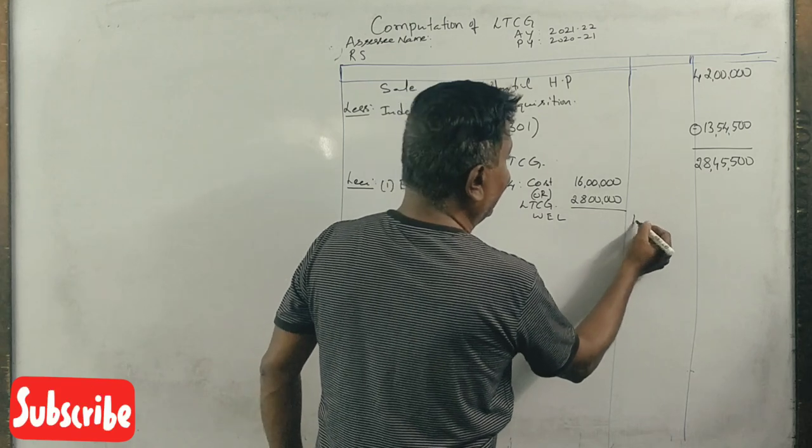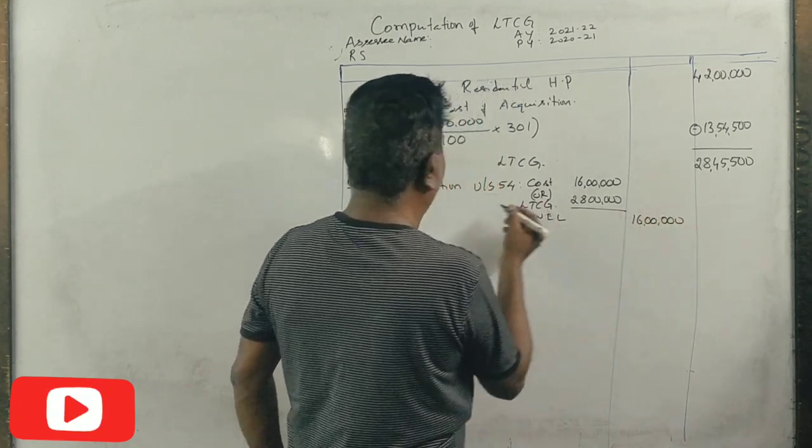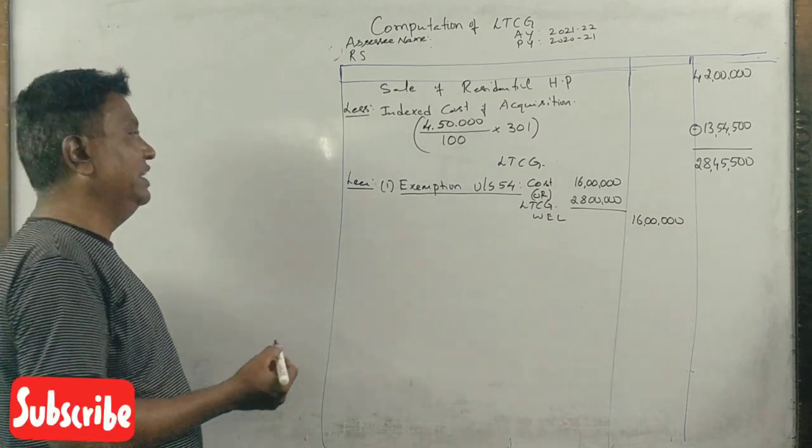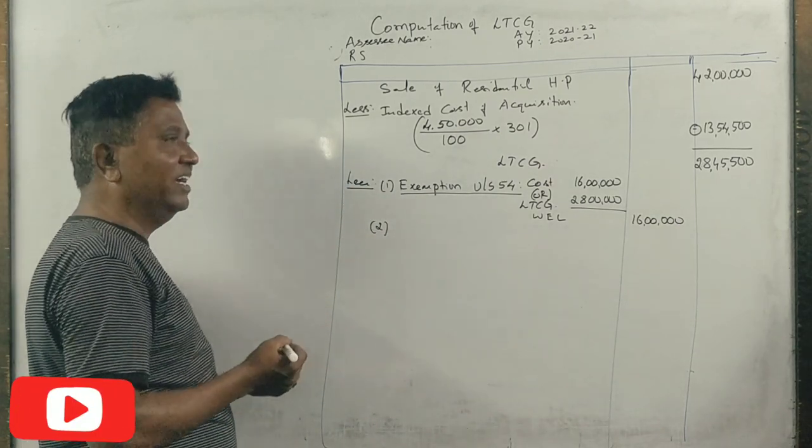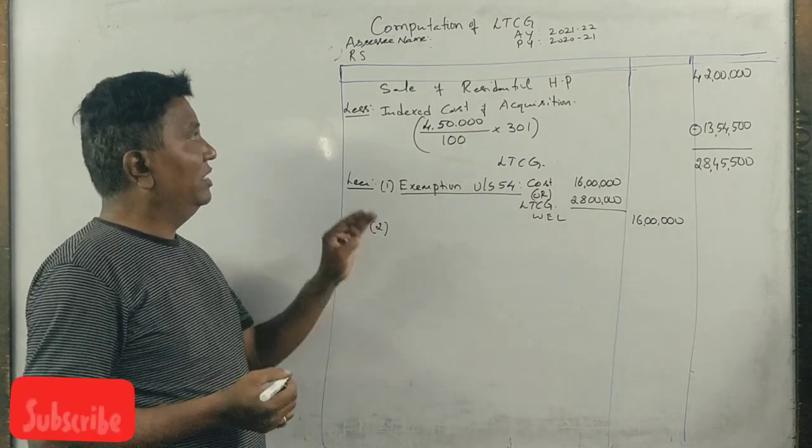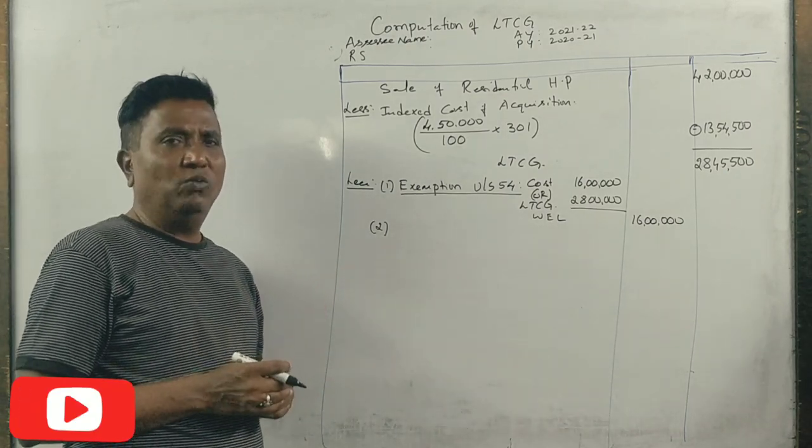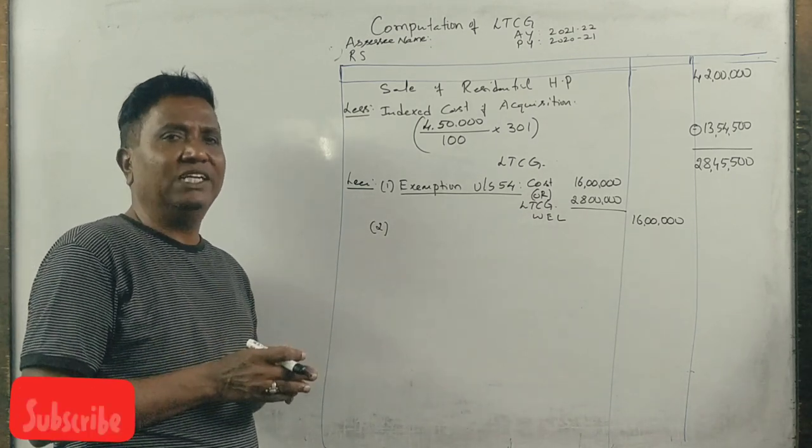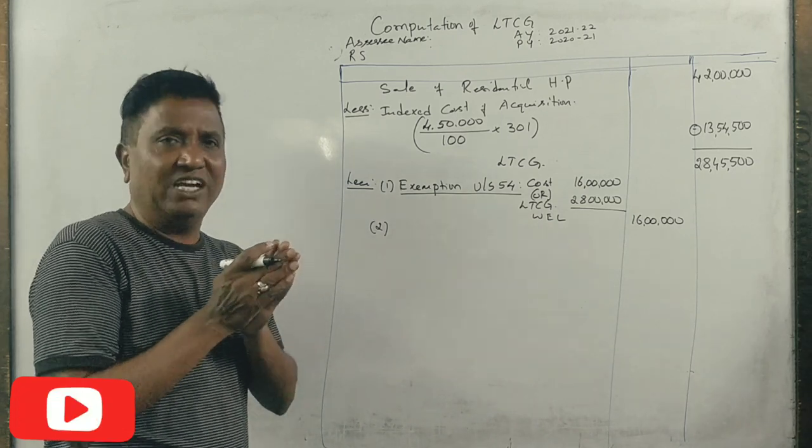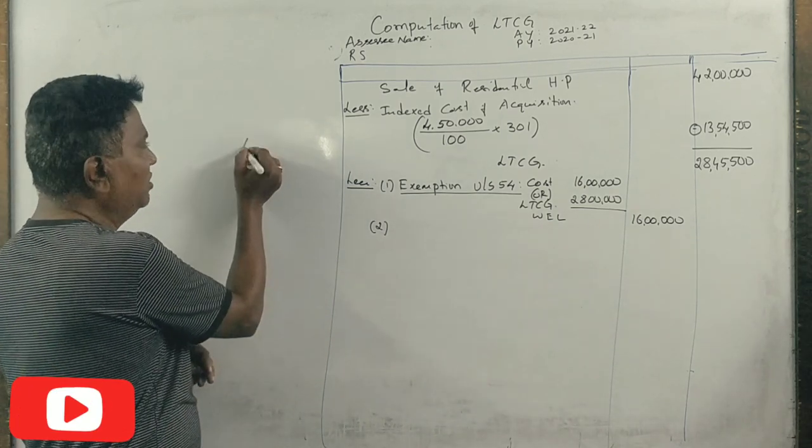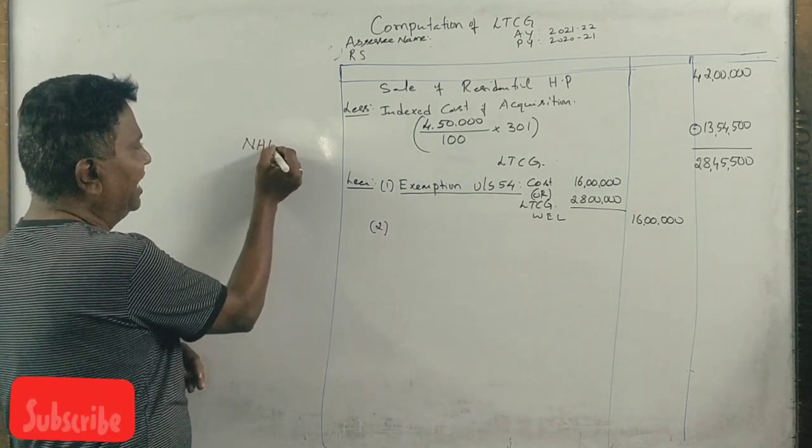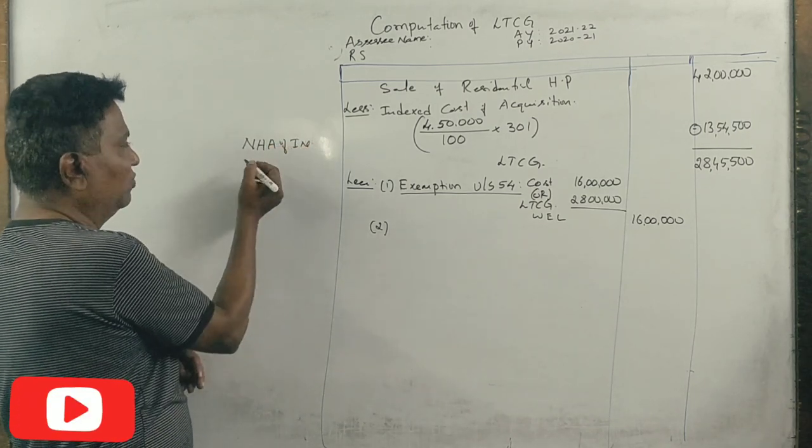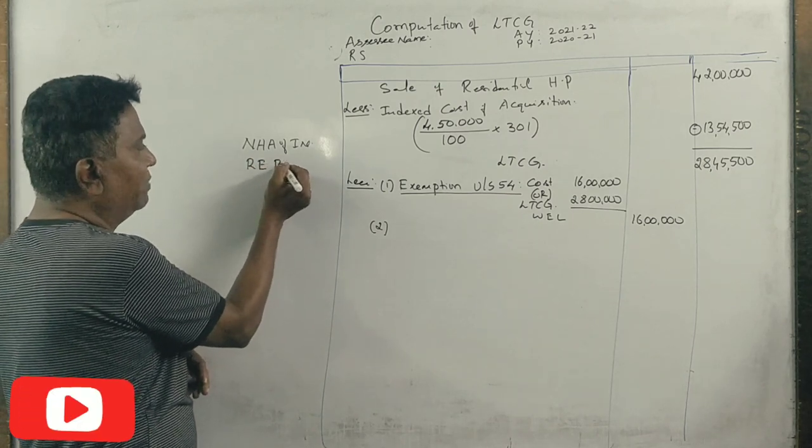You invested in bonds, National Highway Authority of India bonds, rural electrification bonds. If you invest in these long-term assets, you can do exemption.